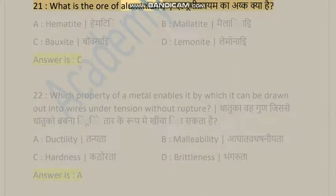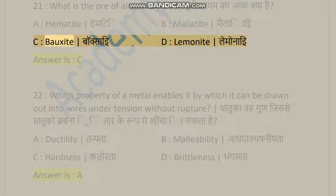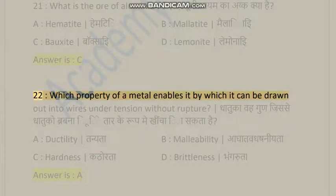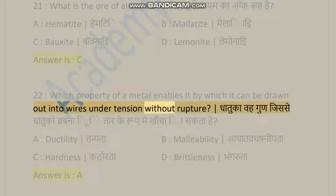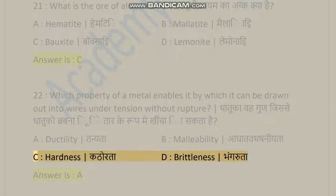Question 21: What is the ore of aluminium? A) Hematite, B) Bauxite by process, C) Bauxite, D) Limonite. Answer is C. Question 22: Which property of a metal enables it to be drawn out into wires under tension without rupture? A) Ductility, B) Malleability, C) Hardness, D) Brittleness. Answer is A.